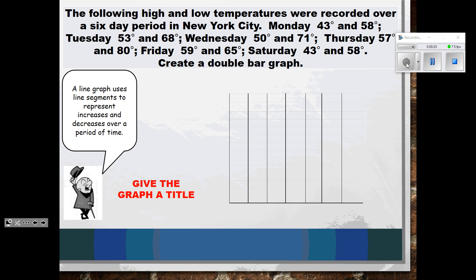This information includes both high temperatures and low temperatures for Monday through Saturday. It says to create a double bar graph. The reason this is a double bar graph is because we are graphing two different bits of information — we're going to have one graph for the high temperatures and one graph for the low temperatures.